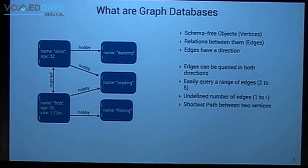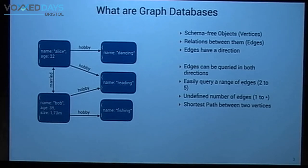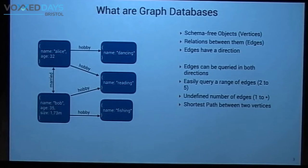Typically, edges have a direction, but edges can be queried in both directions. I can say please go backwards in the edge, or go forward, or go both ways — that really depends only on the query, not on the way you store the edge. Graph databases are extremely good if you have to query ranges of steps, like two to five hops from a starting point, which is super hard to formulate in a relational database. You can even do an undefined number of steps, or find shortest paths between two random points.